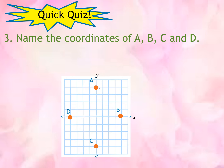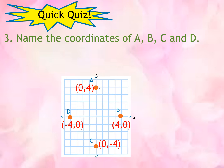Let us start with d: it is (negative 4, 0). Point a is (0, 4). And c is (0, negative 4). And b is (4, 0). As you can see, when x is equal to 0, it lies along the y-axis. But if y is equal to 0, the point lies along the x-axis.